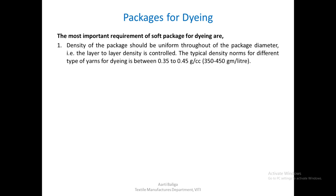We should be very careful and see that the layer-to-layer density is quite closely controlled. The typical density norms for different types of yarns for dyeing is between 0.35 to 0.45 grams per cc.